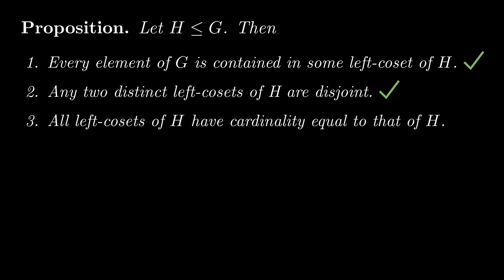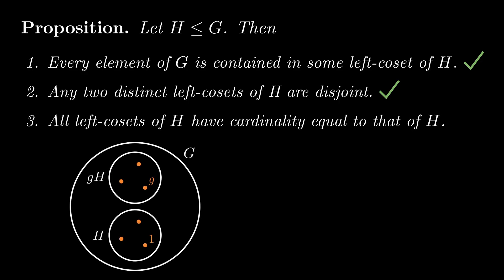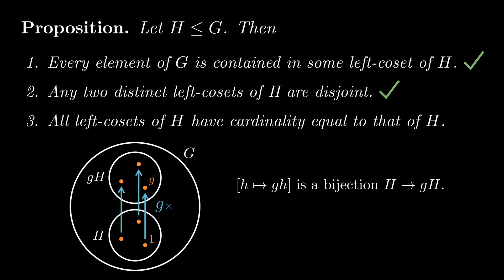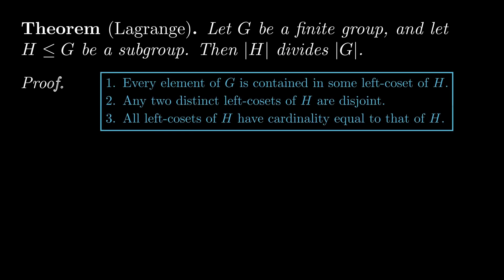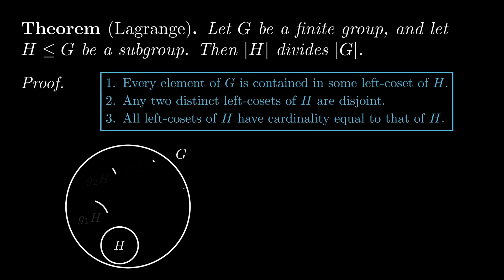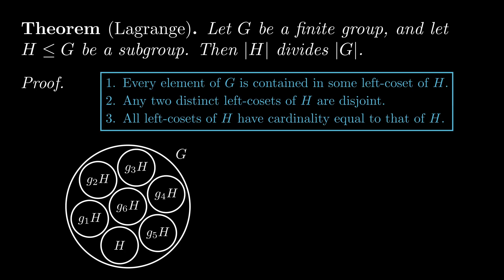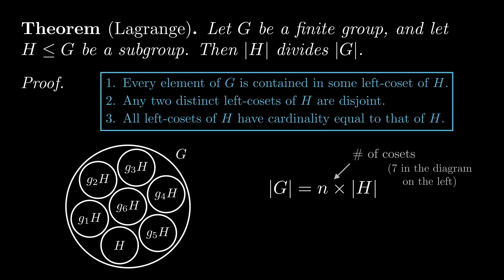Finally, all left cosets of H have cardinality equal to that of H. To see this, the left multiplication map by g is a bijection from H to gH, since its inverse is the left multiplication map by g-inverse. These three properties of left cosets tell us that given a group g and a subgroup H, the left cosets of H split g into disjoint subsets, all with cardinality equal to that of H. Letting n denote the number of these disjoint subsets, we have that the cardinality of g equals n times the cardinality of H, meaning the cardinality of H divides the cardinality of g, completing our proof of Lagrange's theorem.